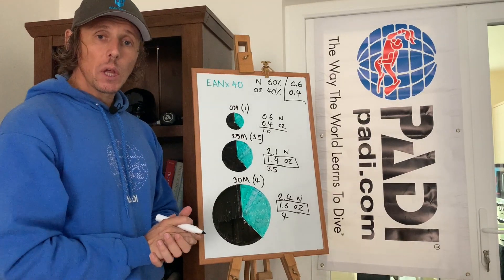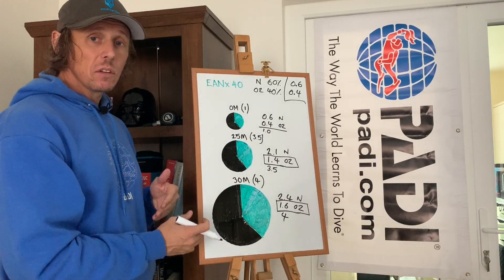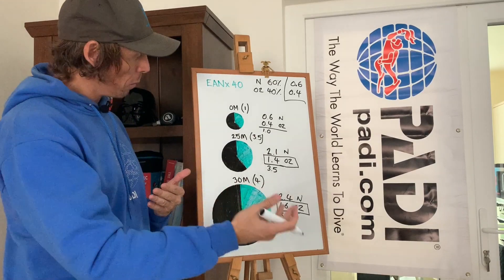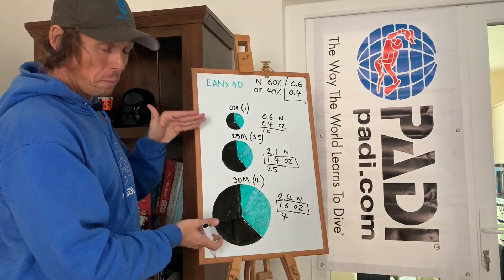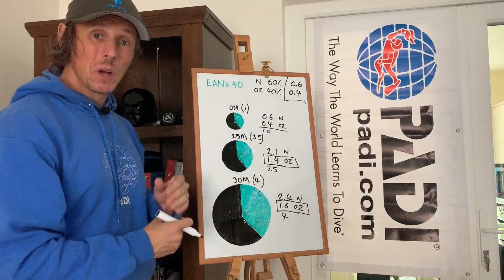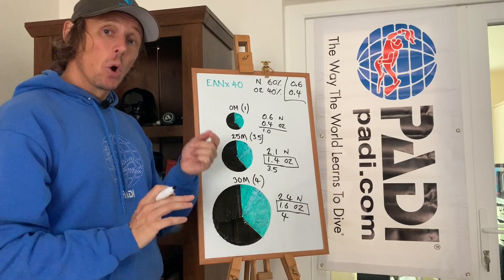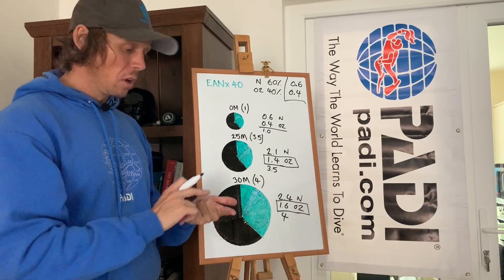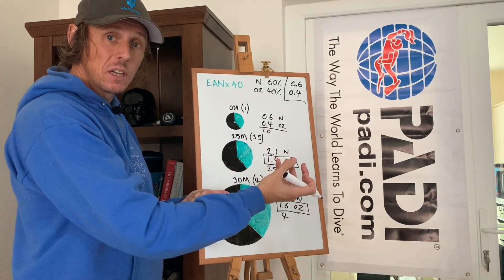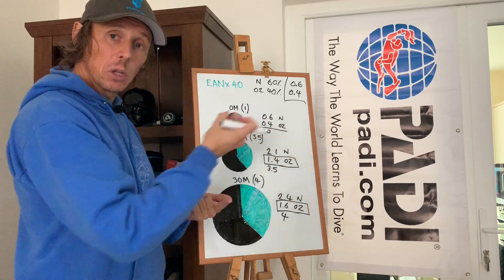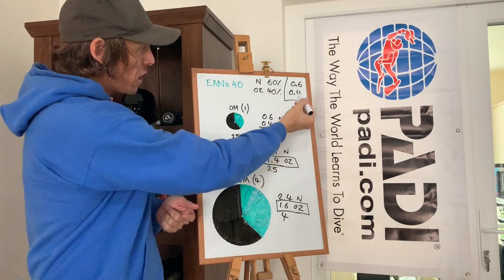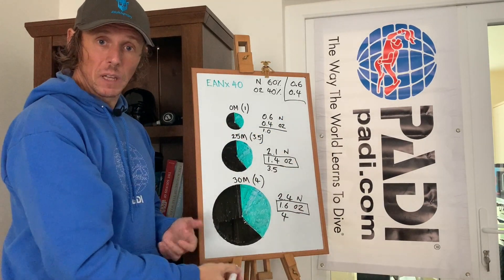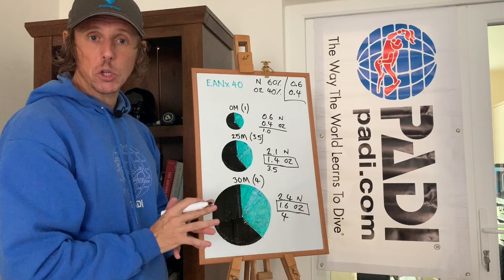Even if this is a trimix — a multi-gas mix beyond just two gases — we still do the same thing: work out each percentage, convert it to a fraction, and multiply those fractions by the overall pressure. And that's your partial pressure.